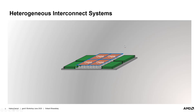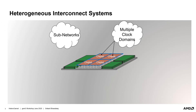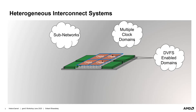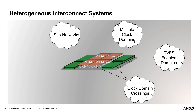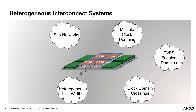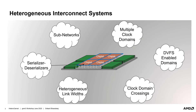Let's see the dimensions of heterogeneity that such a modern processor could bring in terms of the interconnect system. Firstly, there could be multiple sub-networks — interconnect networks within each chiplet as well as the network on the integrating interposer. Each chiplet could potentially have a clock domain of its own, and the interposer network could be working at its own clock domain. Each of those clock domains could be enabled with DVFS mechanisms that further increase the heterogeneity. These domains would require clock domain crossing units to synchronize data and control signal transfer. Further, the interposer network could be utilizing different physical link bandwidths, requiring serializer deserializer units to convert packets between these link width boundaries.